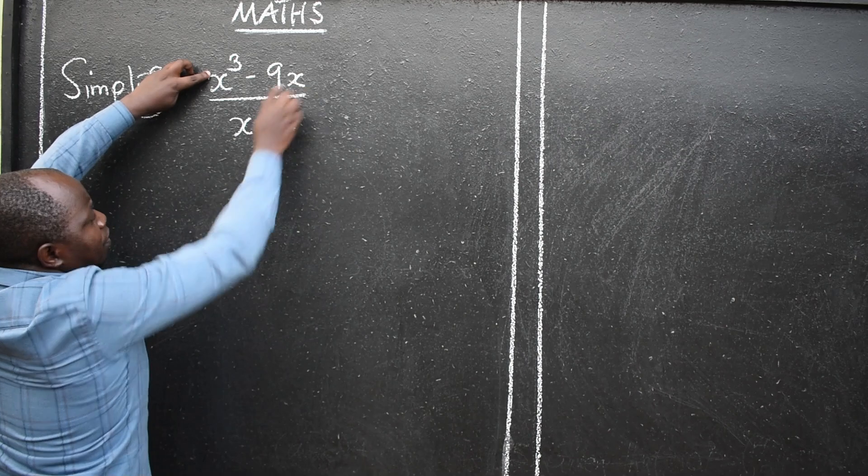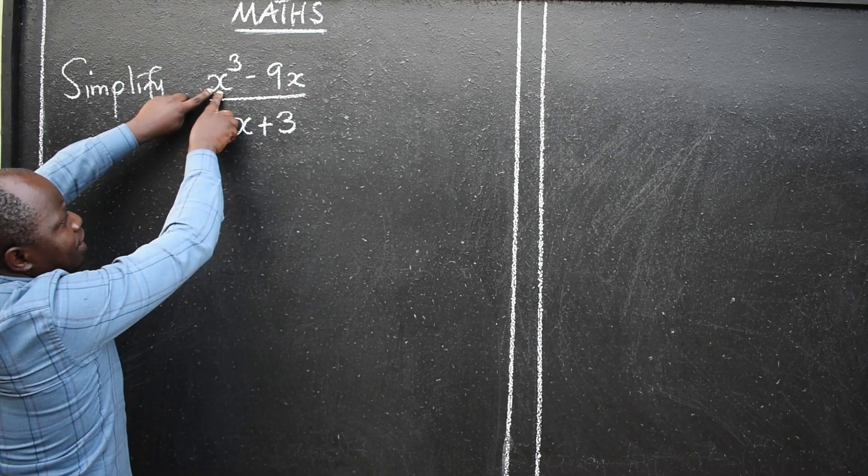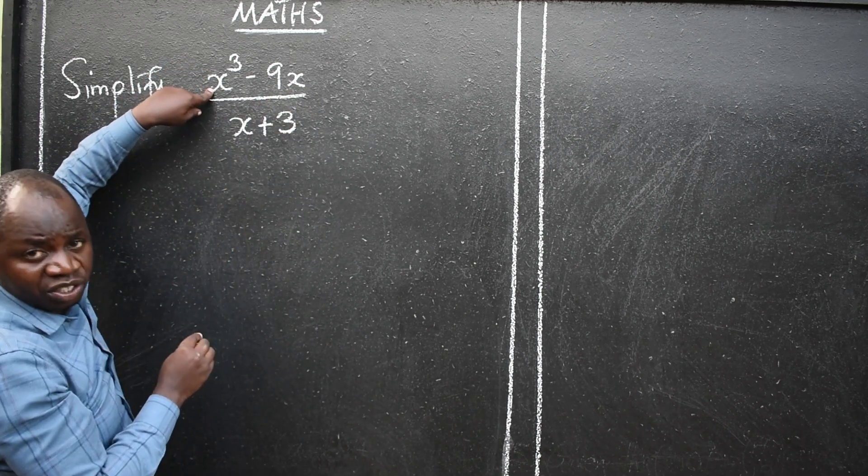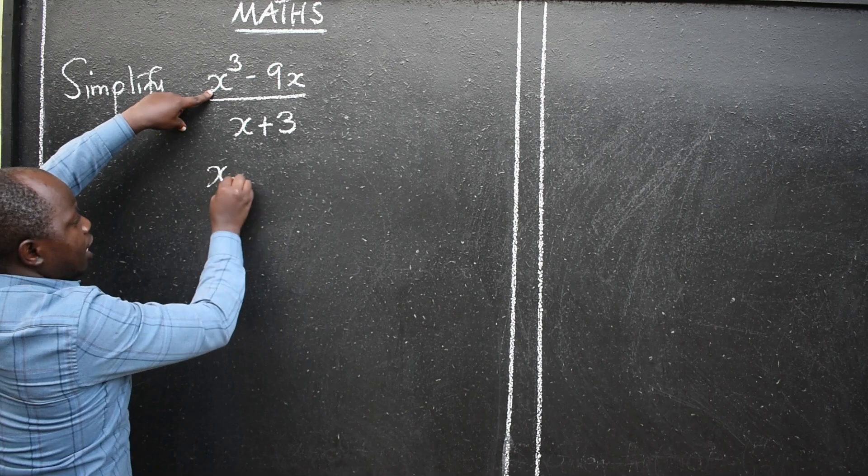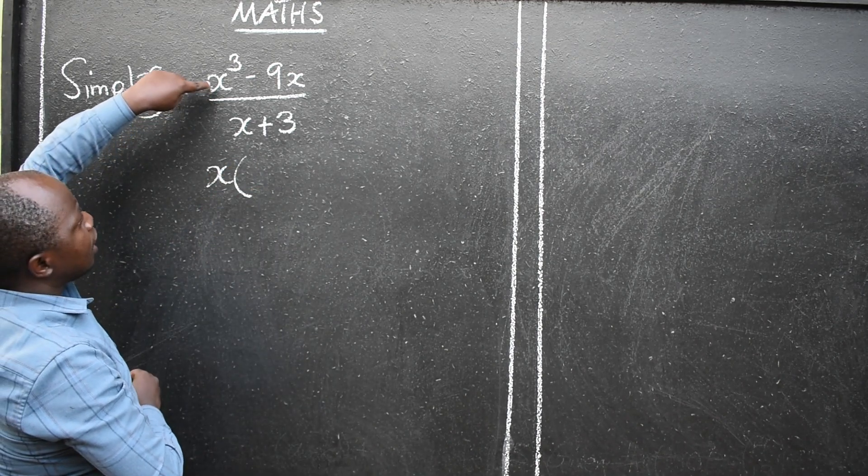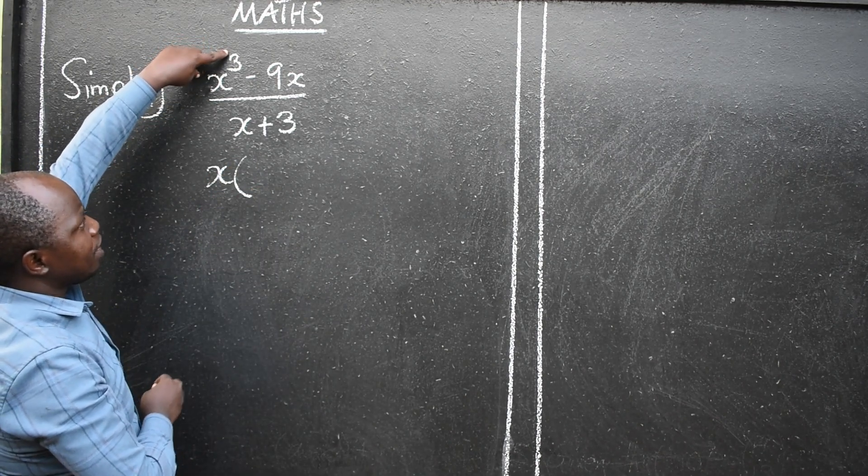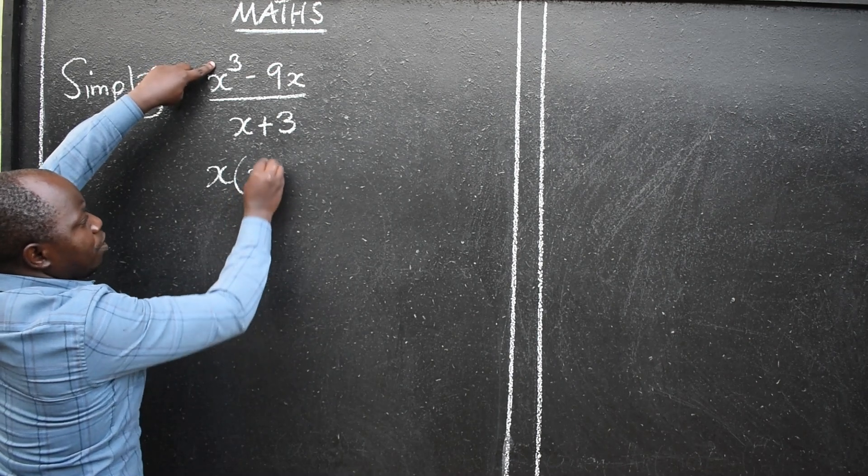So here when we factorize, we can see x here, there is also x. It means it is common. So we are going to say x is common. x into x to the power 3, there will be x squared that will remain.